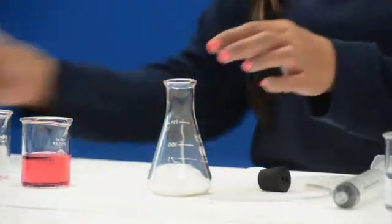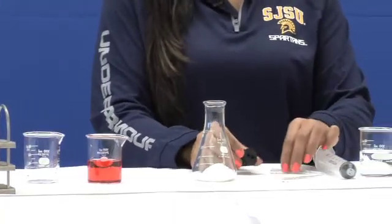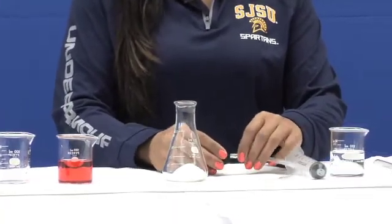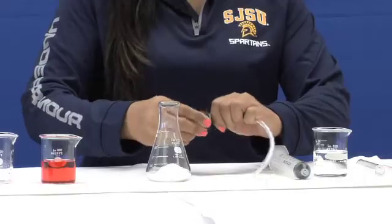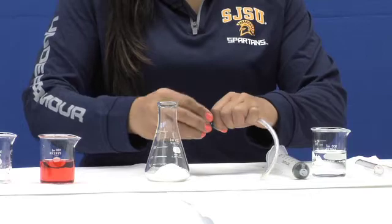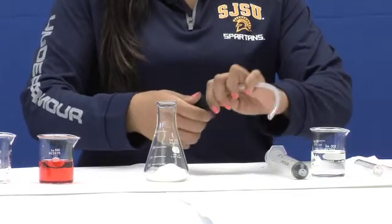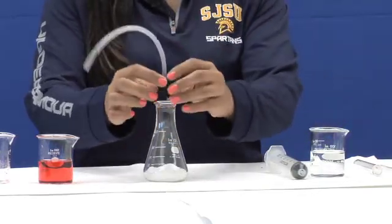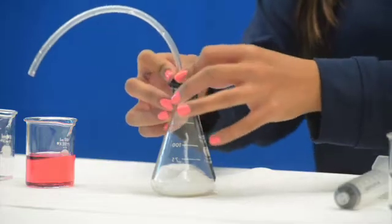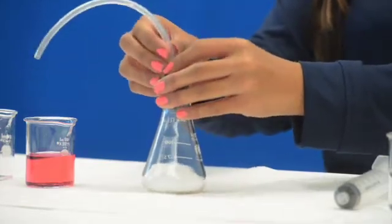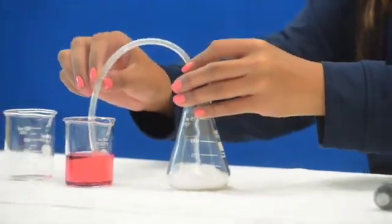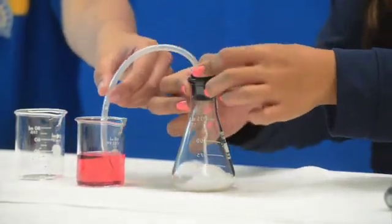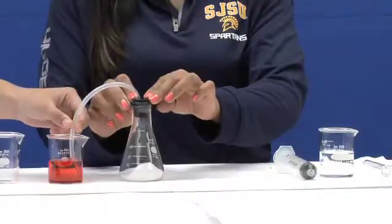Then, take your stopper, which has two holes, and place your plastic tubing in the larger hole. Secure the rubber stopper with the plastic tubing into your flask and completely submerge the other end of the plastic tube into your beaker and have a partner hold it.